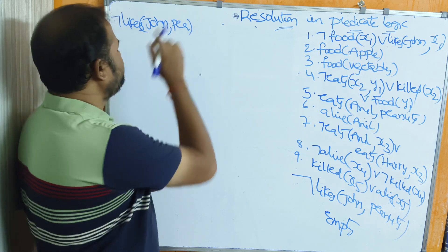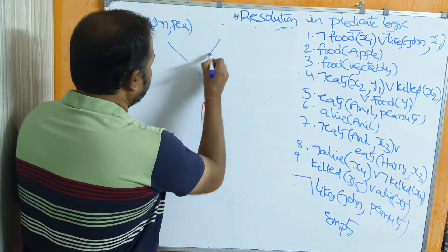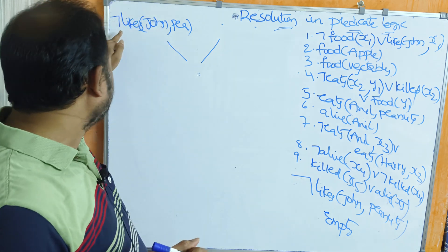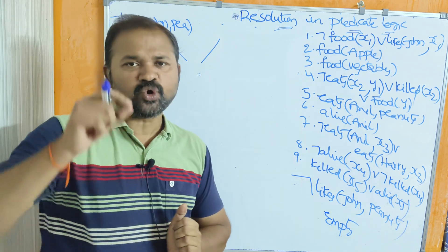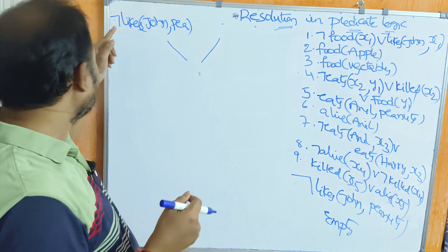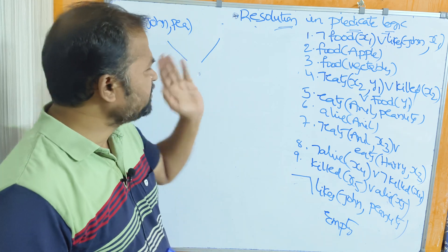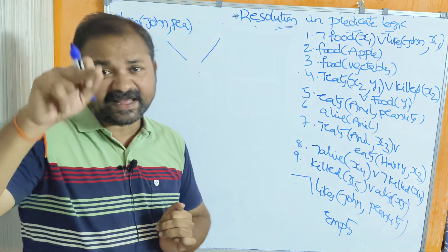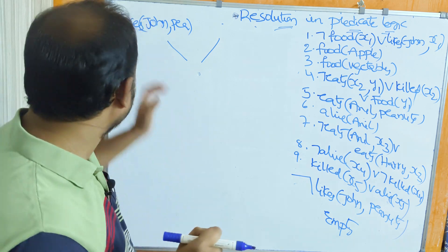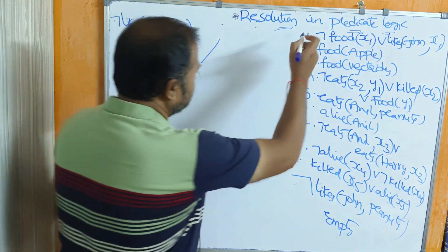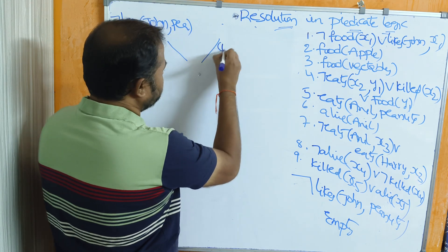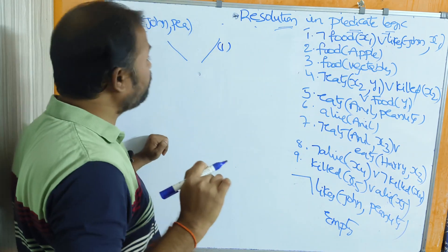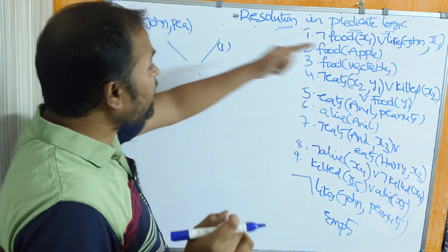The first parent clause is negation likes(john, peanuts) — for space constraints writing as negation likes(john, peanuts), abbreviated as P. Now we select another parent clause that contains likes(john, peanuts) so we can cancel it. The first clause form is negation food(x1) or likes(john, x1). We replace x1 with peanuts.